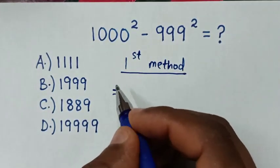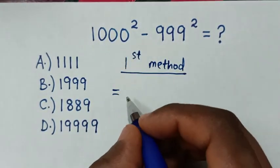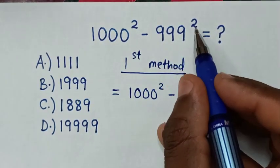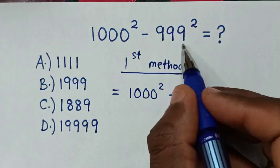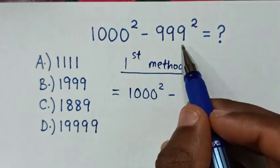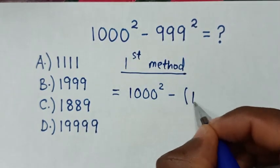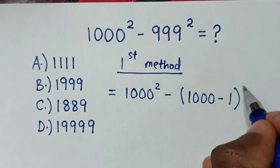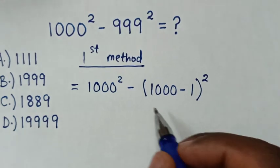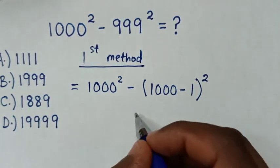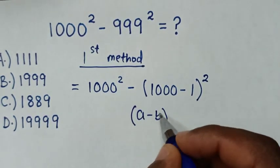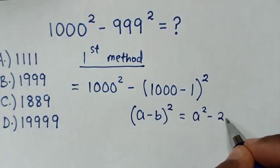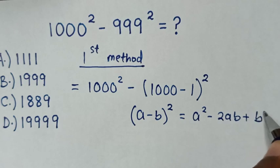Which will be equal to: from here, it is 1000 square, then minus 999 square. For this, to have a common base with 1000, this 999 is the same as bracket 1000 minus 1 bracket square. Then the next step — this part is in the form of A minus B bracket square, which is equal to A square minus 2AB plus B square.